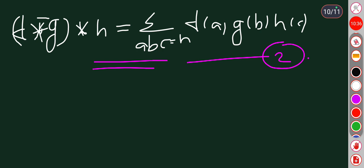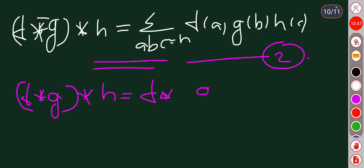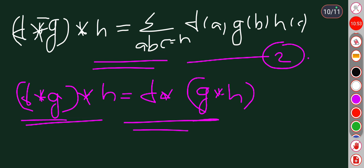From equations one and two, f star (g star h) equals (f star g) star h. So the associative property is satisfied, and therefore Dirichlet multiplication is both commutative and associative.